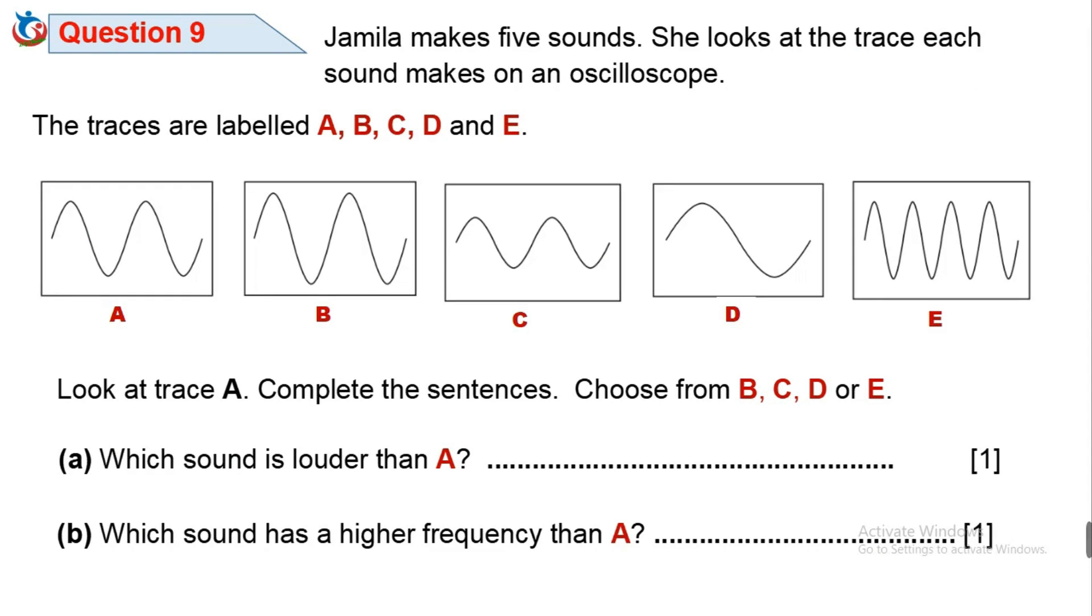Question 9. Jamila makes 5 sounds. She looks at the trace each sound makes on an oscilloscope. The traces are labeled A, B, C, D and E.